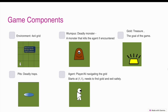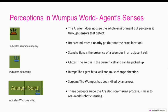Game Components: the environment is a 4x4 grid. The Wumpus is a deadly monster that kills the agent if encountered. Gold is the treasure and the goal of the game. Pits are deadly traps. The agent is the player or AI navigating the grid, starts at position 1,1, and needs to find gold and exit safely.